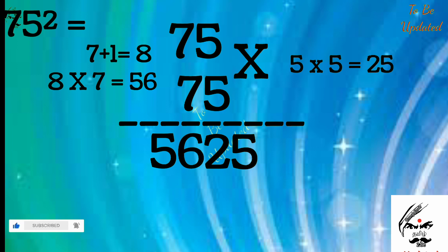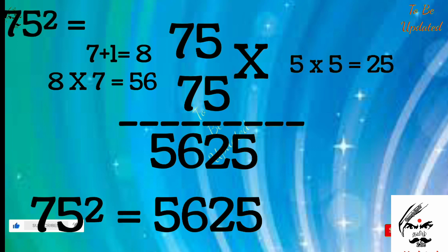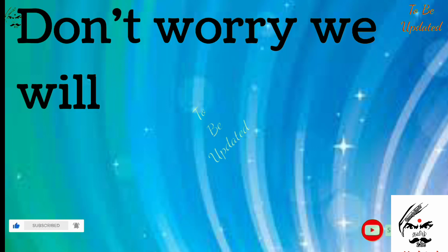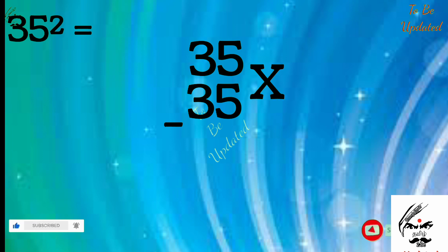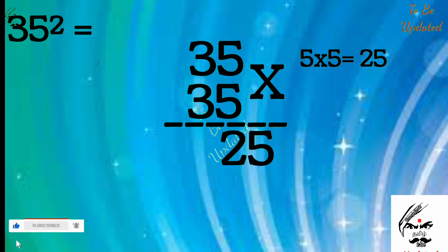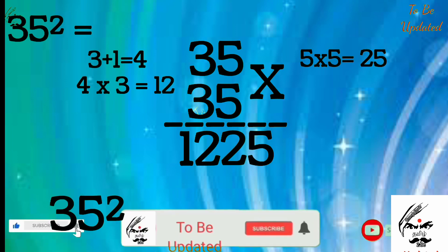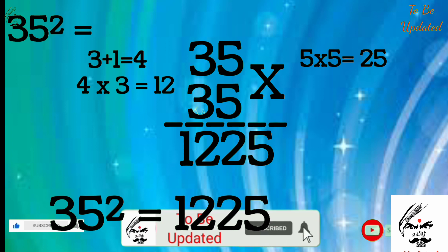Now we are going to see 35 squared, so 35 into 35. The unit digit must be multiplied, so 5 times 5 is 25. The first number is 3, so 3 plus 1 equals 4. That 4 we are going to multiply with the down number 3, so 4 times 3 is 12. So the answer is 1225.